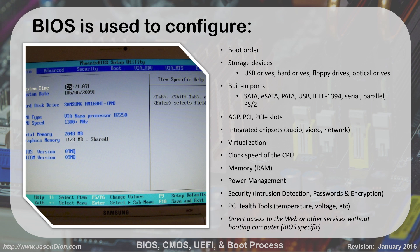What do we use BIOS for? We use it to configure all sorts of things in the computer. We can configure the boot order and storage devices — should we be booting from the USB drive first or the hard drive first, or the floppy drives or the optical drives. We can configure built-in ports like PS/2 ports, serial ports, USB, and SATA — whether we want them on, off, or disabled. We also have AGP, PCI, and PCIe slots; we can configure their speeds and settings.